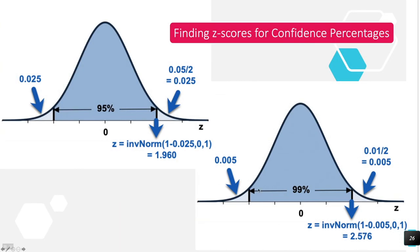For 99% confidence, we have 99% in the center, leaving 1% for both tails — half a percent for each tail. We divide 1% by 2 to get 0.005. So we do inverse norm of 1 minus 0.005, with mean 0 and standard deviation 1, and that gives us 2.576 as our z-score. That's how we find z-scores for any confidence level.